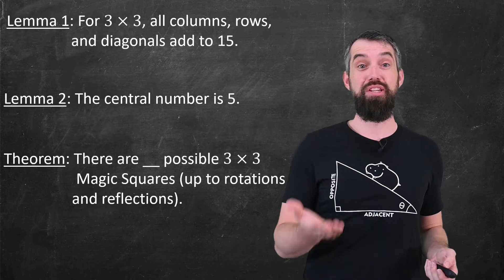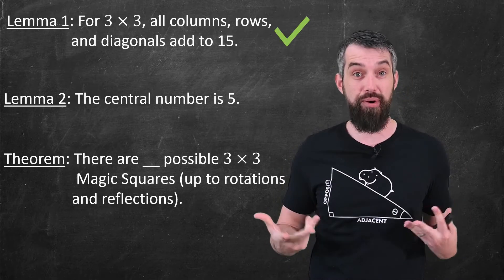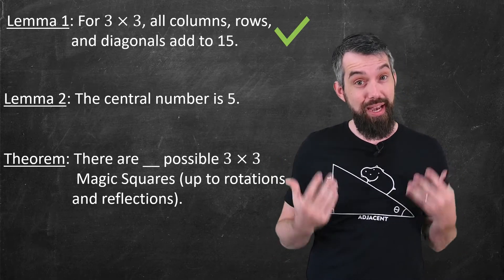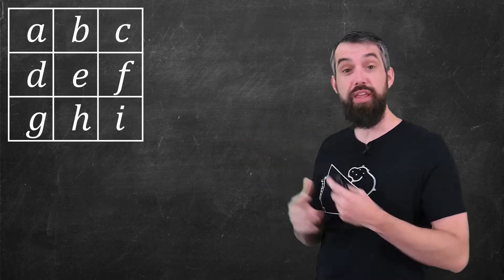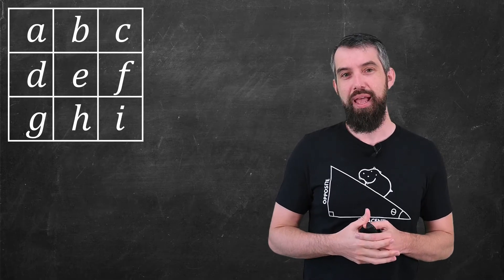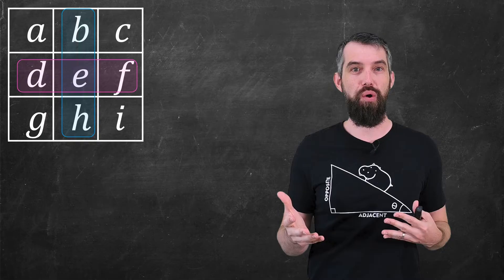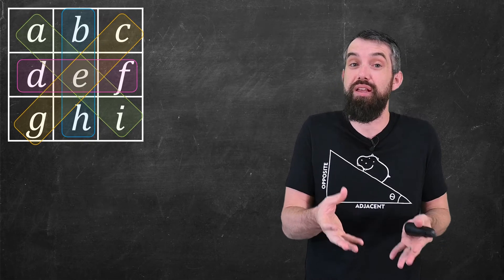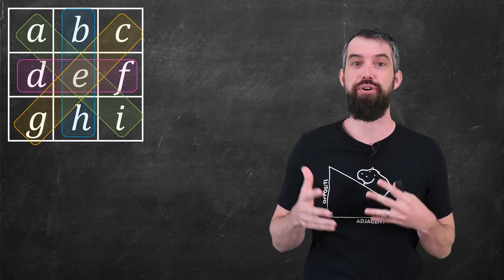Alright, so we have managed to prove our first lemma, and we even talked about how this first lemma generalizes to the 4x4 case. Next lemma is about the center number being 5. I'm going to do a similar trick. I'm going to start with a generic magic square here, and then I'm going to think about every row, every column, or every diagonal that intersects with that central number. That includes the e, which is my placeholder for this center number.